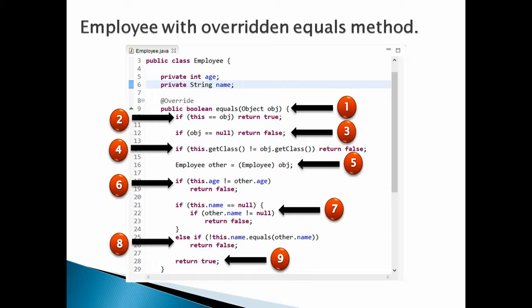Number four, third check: if the class of 'this' object and the class of the object coming to the equals method are not equal, then return false. It signifies that if 'this' object and the incoming object are of different types, then return false. Number five, as the object coming to the equals method is of type Object, we have to typecast it to the actual concrete object.